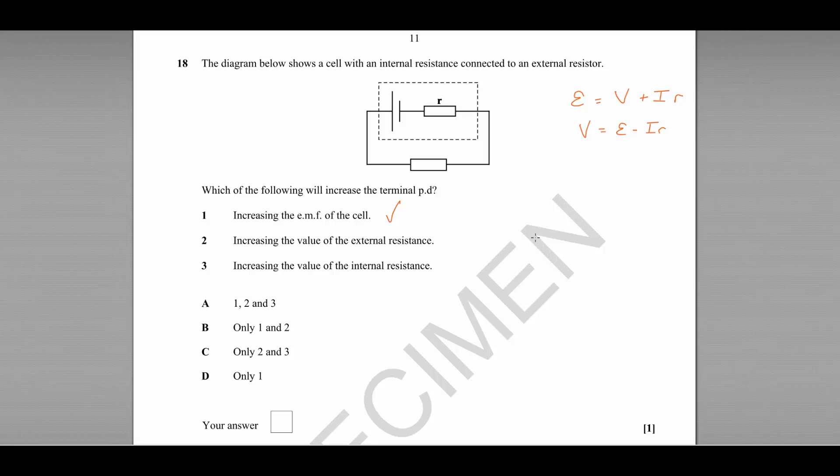Statement two, increasing the value of the external resistance. Well, the terminal PD is equal to V equals IR, where capital R is the value of the external resistance. So if we increase R, we would also increase V. So that is correct.